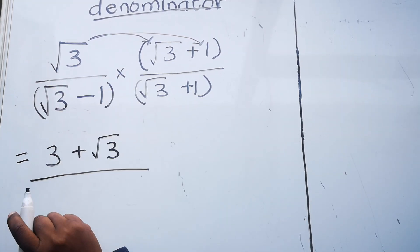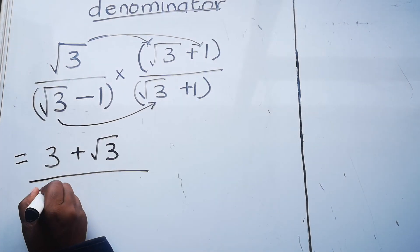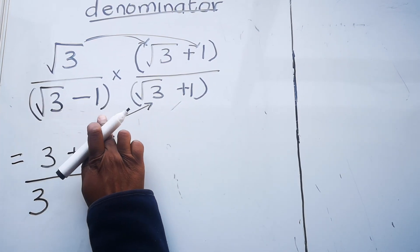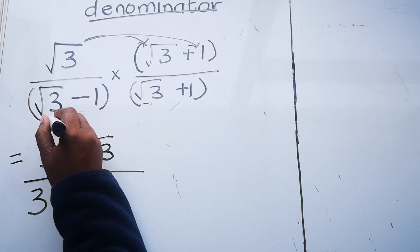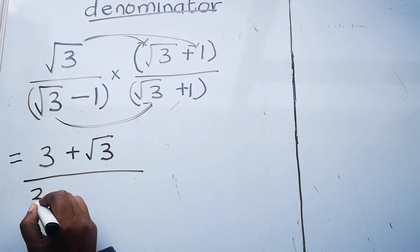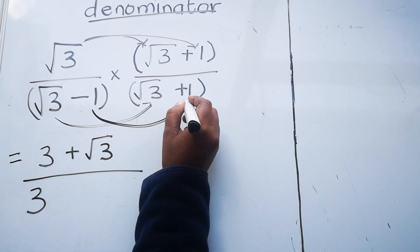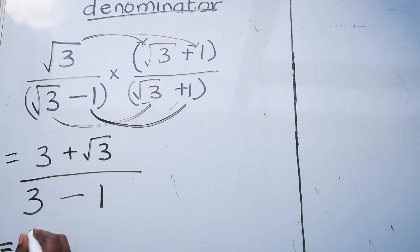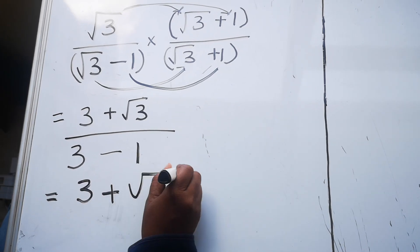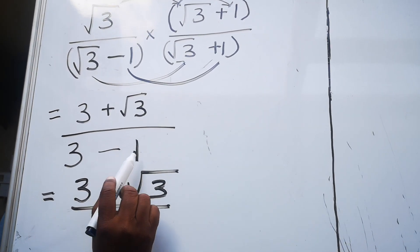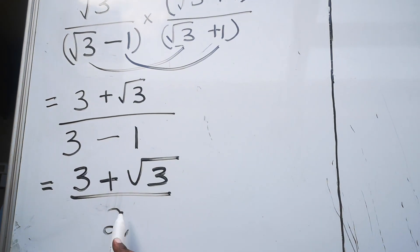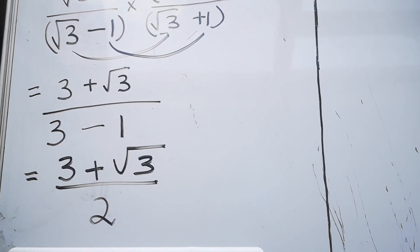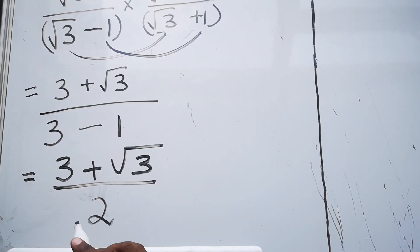For the denominator, using the difference of two squares, square root three times square root three is three, and one times one is one, with negative times positive giving negative — so you get three minus one equals two. Therefore the full result is three plus square root three over two. Your denominator is now rational — you have successfully rationalized the denominator.